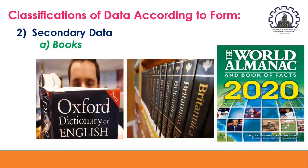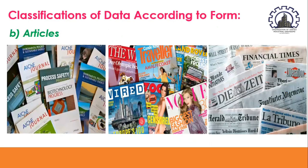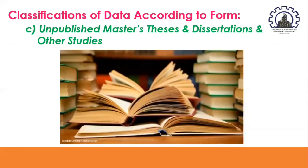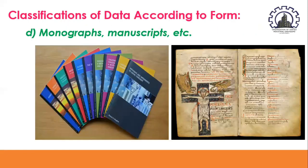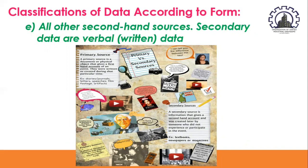If it's secondary data, these are those gathered from secondary sources. The secondary sources are books — including dictionaries, encyclopedias, almanacs, etc. Another considered as secondary data are articles published in professional journals, magazines, newspapers, and other publications. Also, we have unpublished master's theses and dissertations and other studies. We also have monographs, manuscripts, etc. And finally, we have all other second-hand sources.